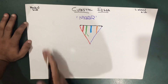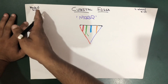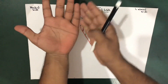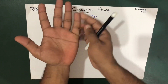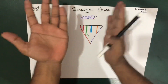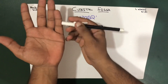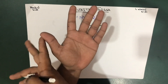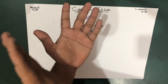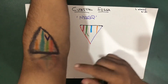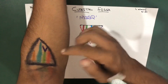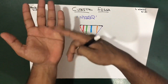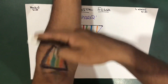The cubital fossa has a medial side and a lateral side. The little finger side is the medial side, and the thumb side is the lateral side. So if I put my hand like this, the red line indicates the medial side towards the little finger, and the other side is the lateral side towards the thumb.